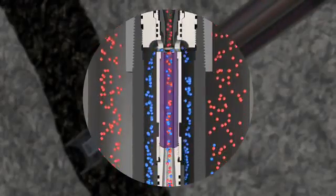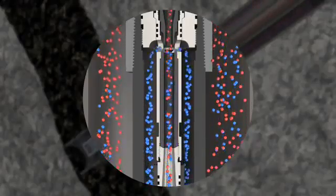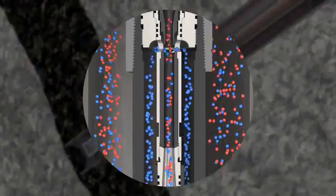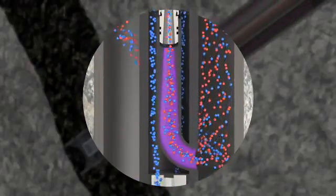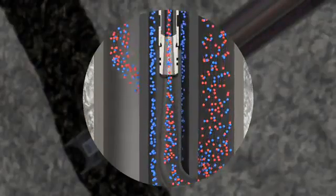In a mixing tube or throat, the power fluid encounters the produced fluid, where it combines and accelerates to an average velocity. In the pump's diffuser, the velocity of the mixed stream is converted back to pressure and the combined fluids lift to the surface.